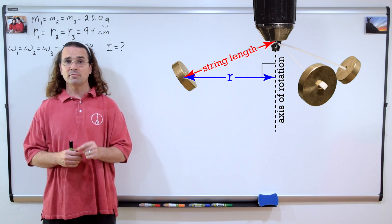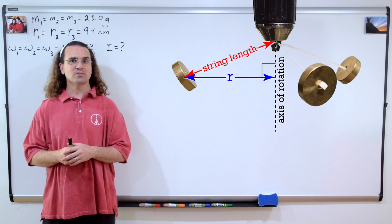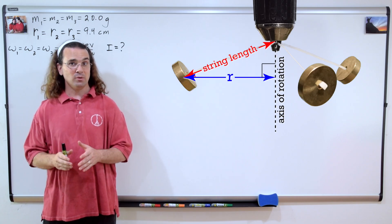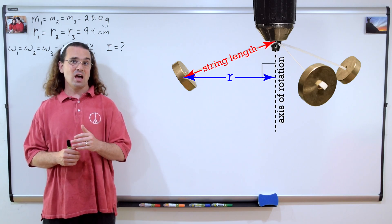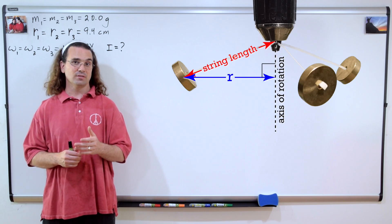But realize, the length of the string is not the same as the radius. So, in this example, distance from axis of rotation and radius are the same thing, however, they are not the same as the length of the string.